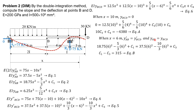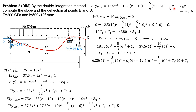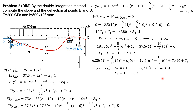Enforcing continuity of deflection — Y AB equals Y BCD at X equals 6: 6.25 times 6 cubed minus 5/12 times 6 to the 4th plus C sub 1 times 6 equals 12.5 times 6 cubed minus 5/6 times 6 to the 4th plus C sub 3 times 6 plus C sub 4. Simplifying: 6(C sub 1 minus C sub 3) minus C sub 4 equals 810. Substituting C sub 1 minus C sub 3 equals 315 from equation B: C sub 4 equals 1080.